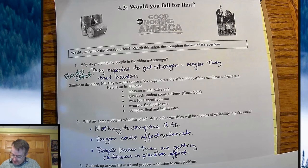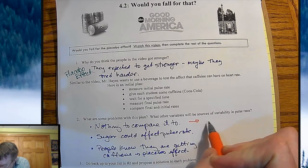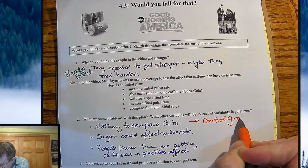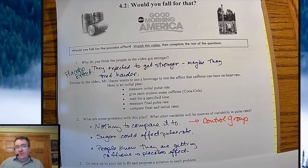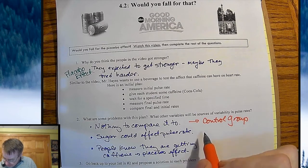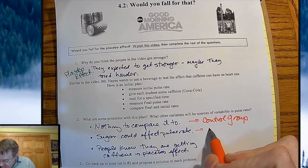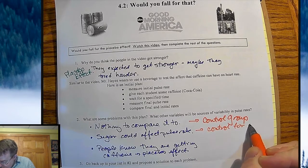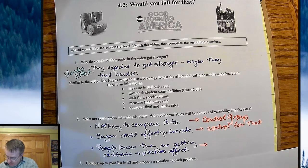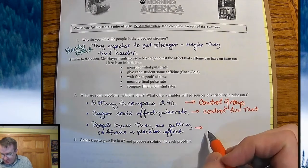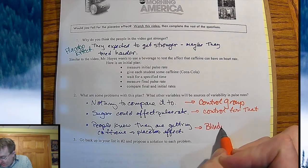So go back and propose a solution for each problem. First, we need a control group — a group where you're not doing anything to them, so in this case they're not getting any caffeine. Second, since sugar could affect the pulse rate, we're going to control for that variable by making sure everybody gets sugar, so we can isolate whether it's the caffeine or not. Lastly, to address the placebo effect, we're going to use blinding — nobody will know whether they're getting caffeine or not.